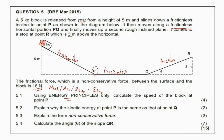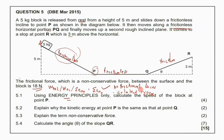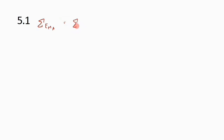Let's call the starting point A and the bottom point P. We are told that the surface from A to P is frictionless. The formula for the sum of mechanical energy works best when the surface is frictionless — that is, when there are no frictional forces, meaning it is an isolated system. So for 5.1, we use: sum of mechanical energy at point A equals sum of mechanical energy at point P.